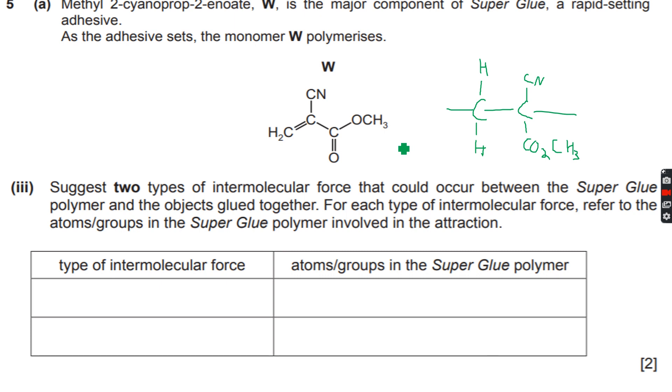However, we have the ester group in the side chain and we also have a nitrogen atom because of this nitrile group in the side chain. And we know that these are very polar groups, so because they are very polar groups, we will have permanent dipole-dipole interactions.